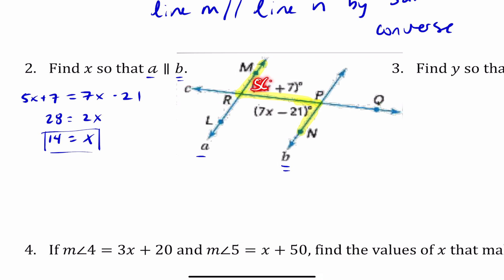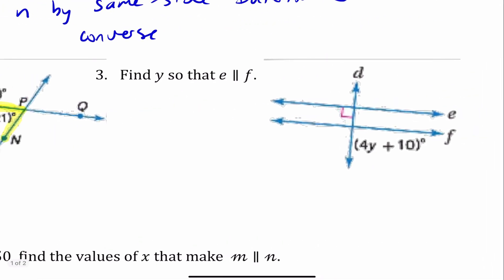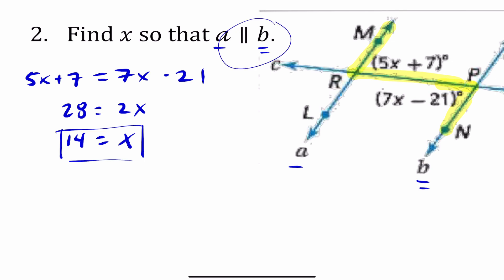If I plug X = 14 in, 5(14) + 7 should equal 7(14) − 21. If these two angles are equal, then A is parallel to B. A is parallel to B by the Alternate Interior Angles Converse.